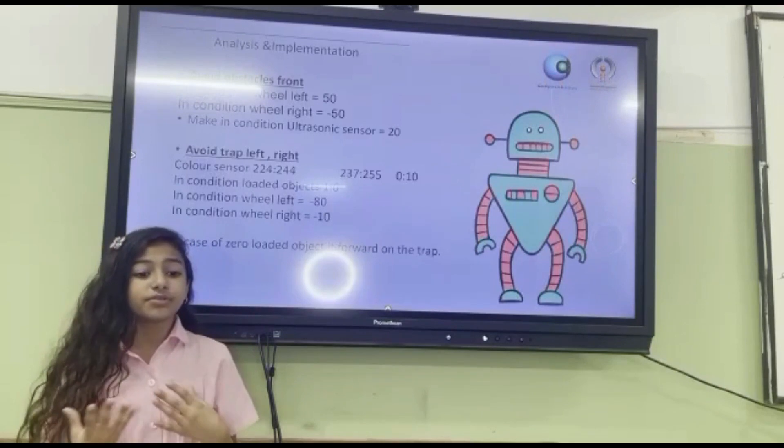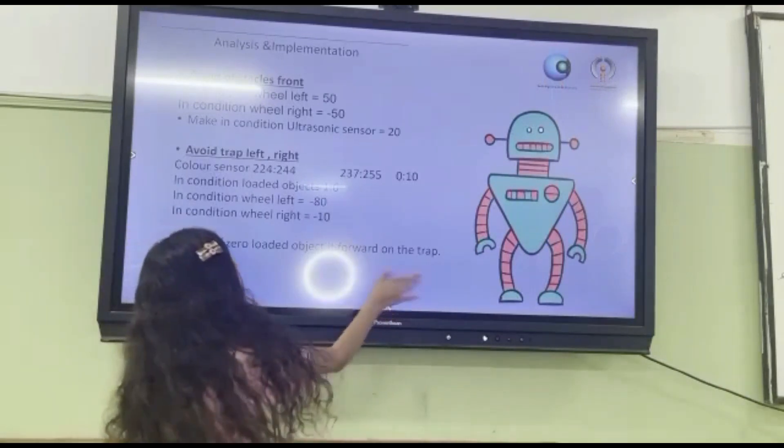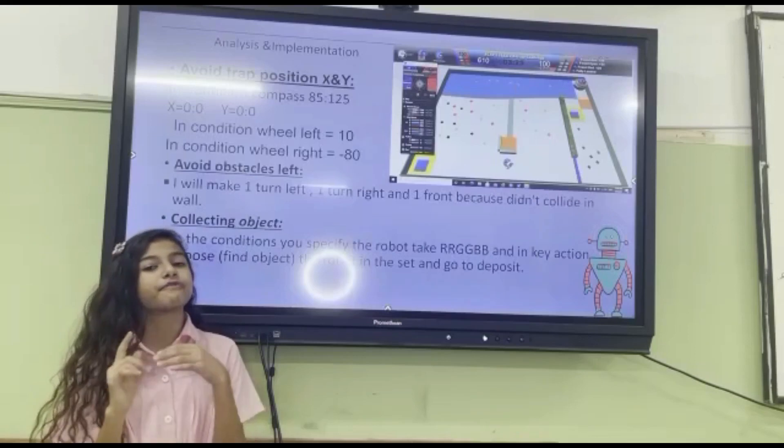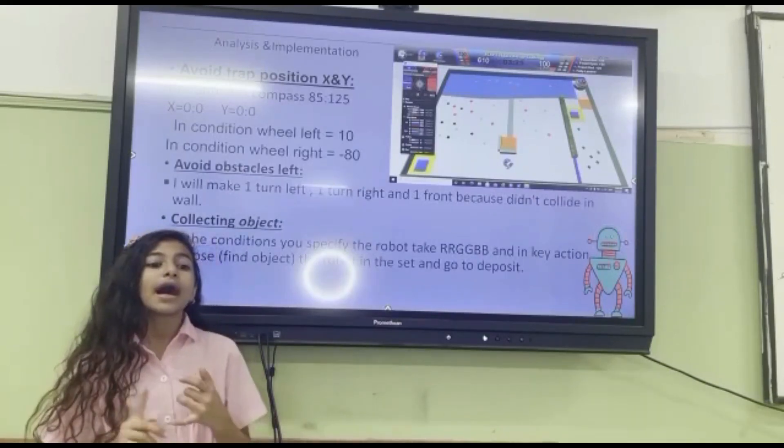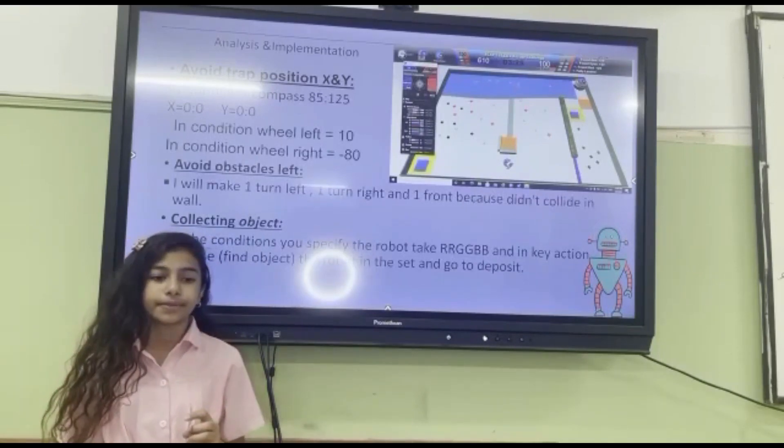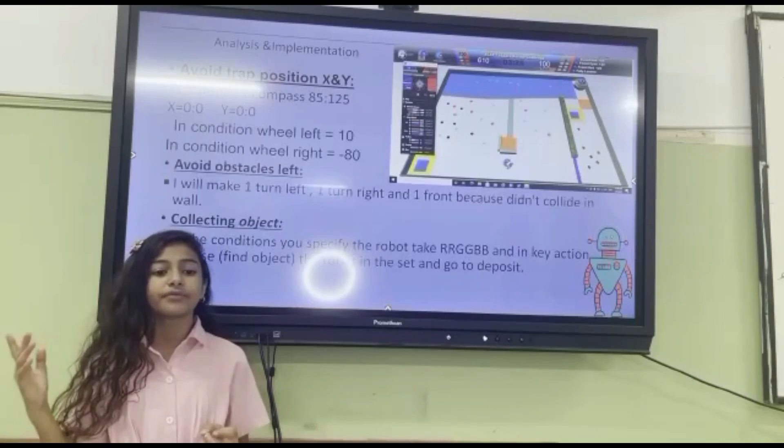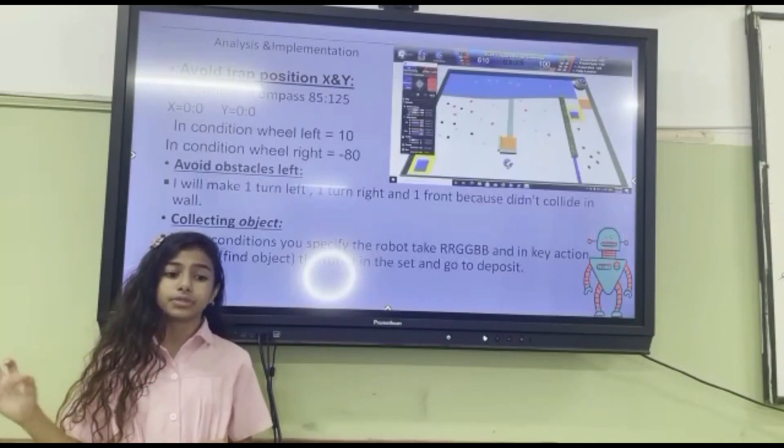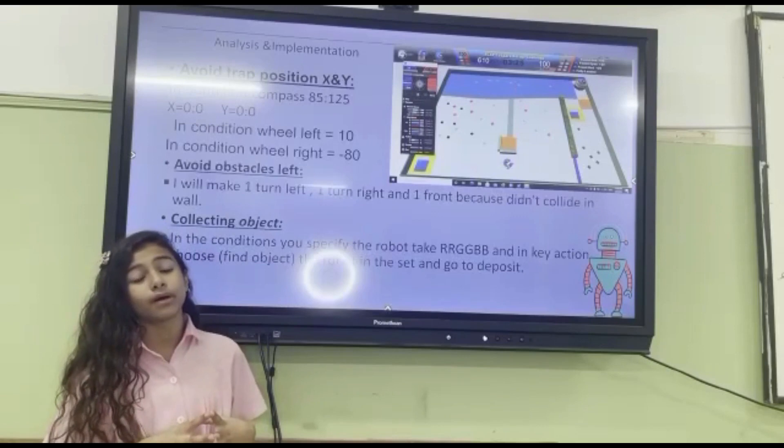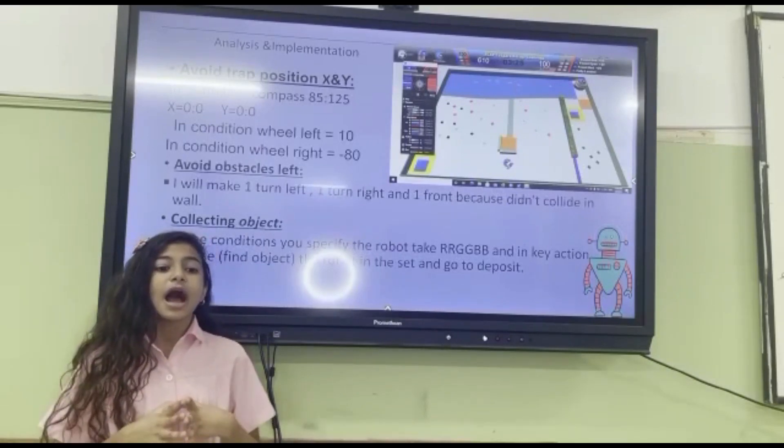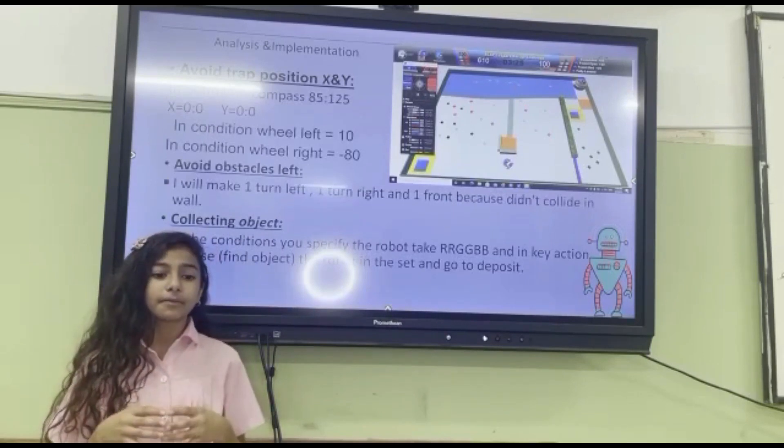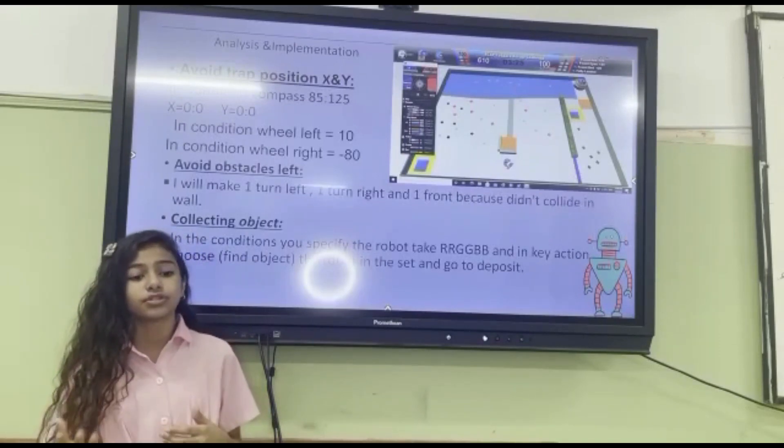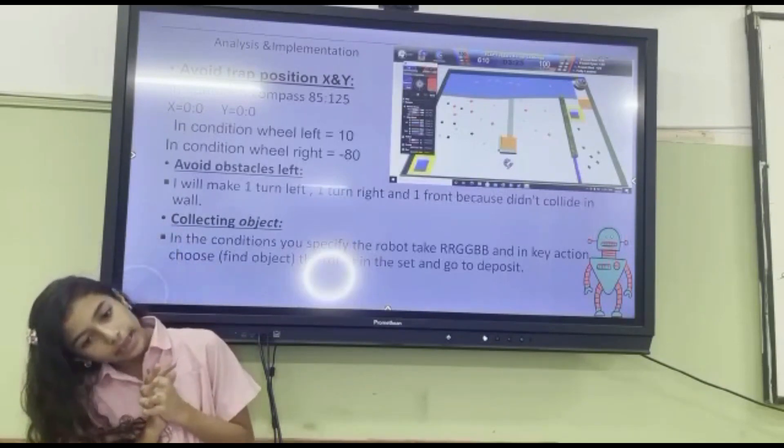In case of zero loaded object, it moves forward to the trap. Avoid trap position x and y. Avoid obstacles left and collect objects. In condition compass 85 to 125, x equals 0, y equals 0. In condition wheel left equals 10, in condition wheel right equals negative 10. Avoid obstacles left, one turn left, one turn right, and one turn front, because the goal is to collect 10 objects.